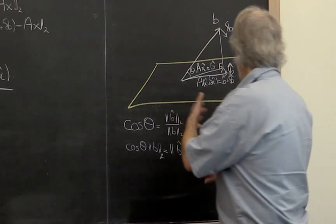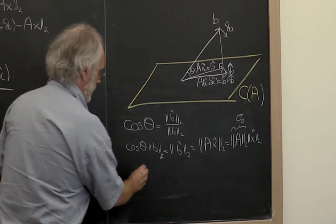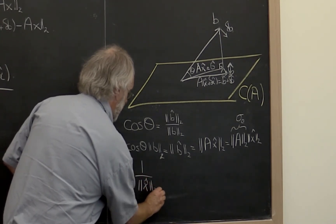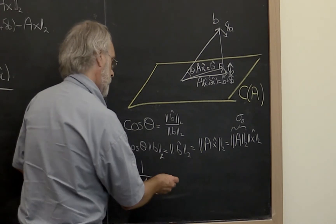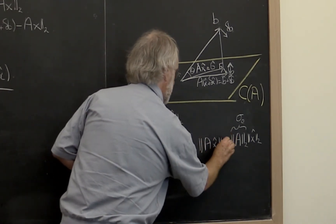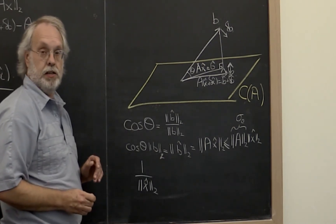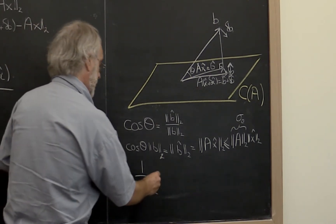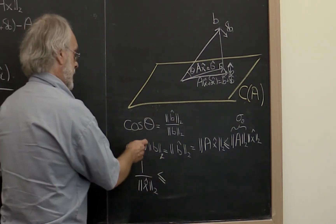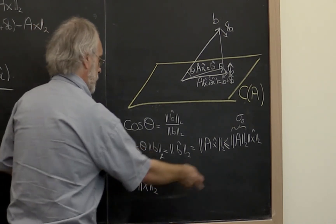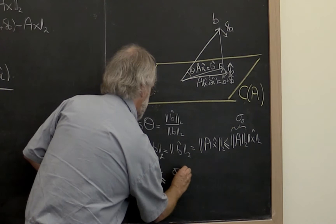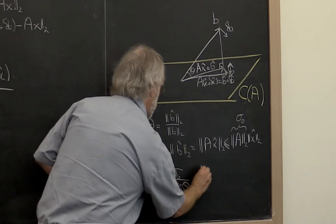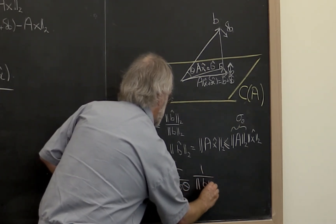We know the 2-norm is a consistent matrix norm and therefore submultiplicative. So ‖b̂‖₂ ≤ ‖A‖₂ · ‖x̂‖₂. And ‖A‖₂ equals the largest singular value of matrix A, σ₀. Manipulating this, we get that 1 divided by ‖x̂‖₂ is less than or equal to σ₀ divided by (cosine(θ) · ‖b‖₂).